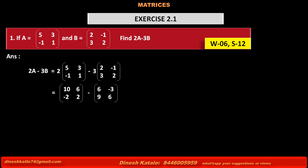Next, we subtract the two matrices by subtracting corresponding elements: 10 minus 6, 6 minus (-3), -2 minus 9, and 2 minus 6.